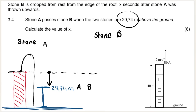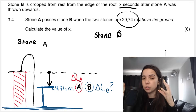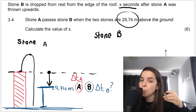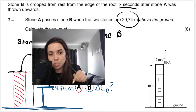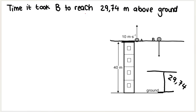The easiest approach: ignore X for now. Think in terms of time. Work out how long it takes for B to reach 29.74 meters above the ground, and how long it takes for A to reach that same position. Once we have both time values, we can find the difference — that difference tells us how long after throwing A we dropped B. This position, 29.74 meters above the ground, is where A and B pass each other.